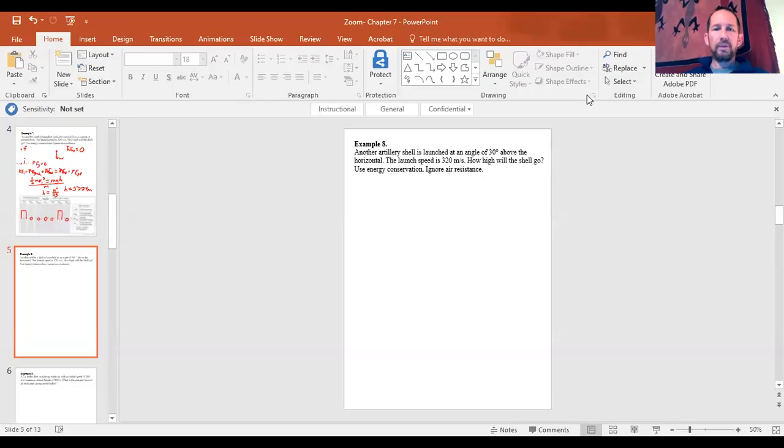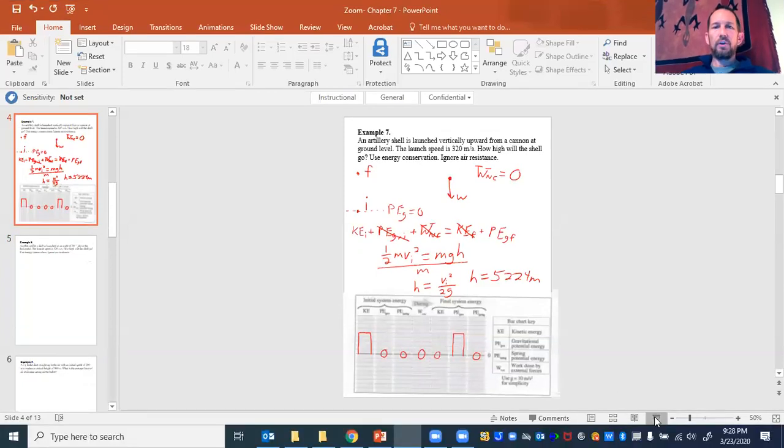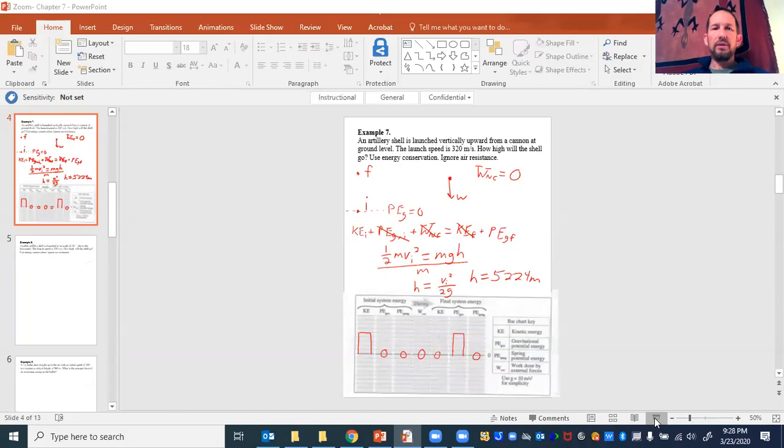All right, hello everybody, welcome back. In our last video we looked at an artillery shell that was launched straight upward, and we found that it went 5,224 meters in the air. And this time we're going to be looking at that same artillery shell, but we're going to launch it at an angle.